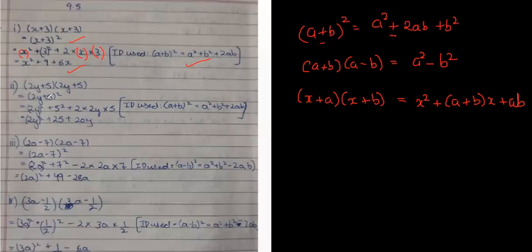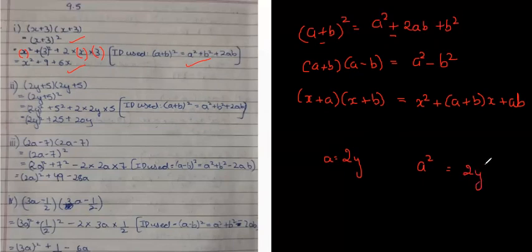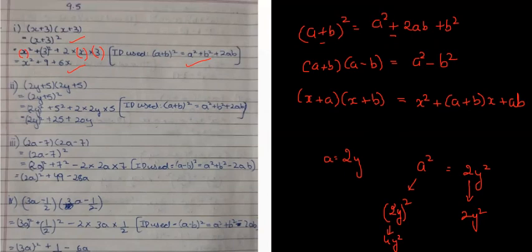Very good. Why I am saying this — if you do not put the bracket, let's say 2y is your 'a' and you need to find a². Some students write 2y² instead of (2y)². Those are different: 2y² stays as 2y², but (2y)² = 4y². Is this clear? There is a difference between putting a bracket and not putting a bracket.